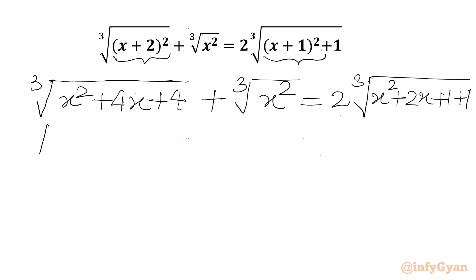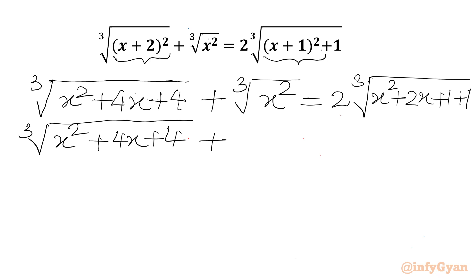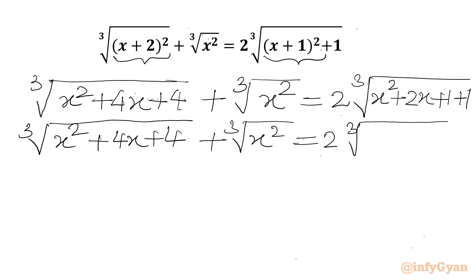Now I can write: cube root of (x² + 4x + 4) + cube root of x² equal to 2 times cube root of (x² + 2x + 2).